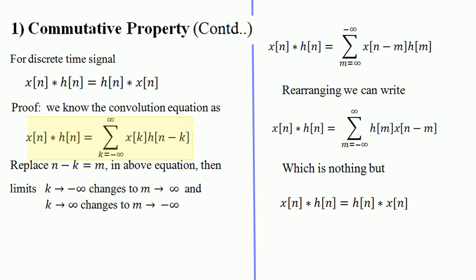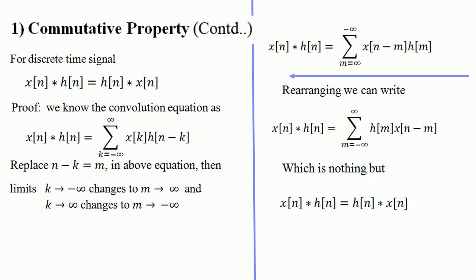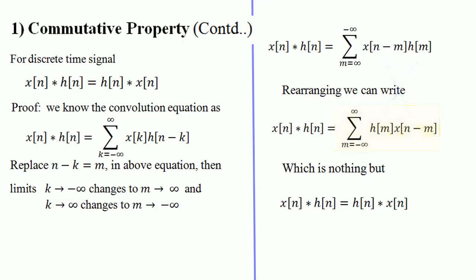Replacing n − k with m, the limits transform: as k → −∞, m → +∞, and as k → +∞, m → −∞. So we write the summation from m = ∞ to −∞ of x[n − m] h[m]. Since summing from −∞ to +∞ or +∞ to −∞ yields the same result, we can write this as Σ (m from −∞ to ∞) h[m] x[n − m], which is h[n] convolved with x[n] — the same as x[n] * h[n].